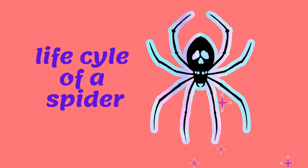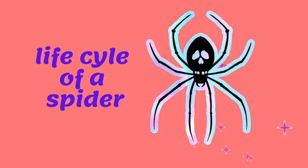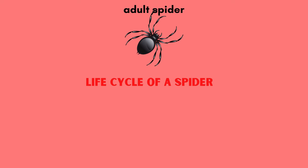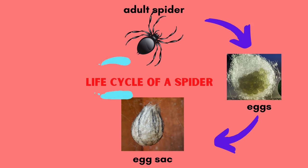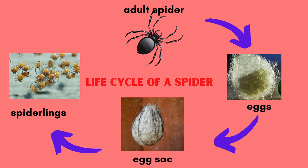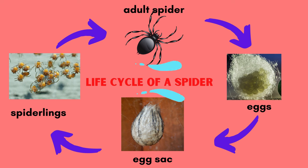Life cycle of a spider. An adult spider will lay eggs. The eggs will become egg sacs, and spiderlings come out. Then they will grow into an adult spider.